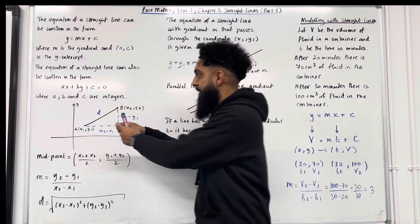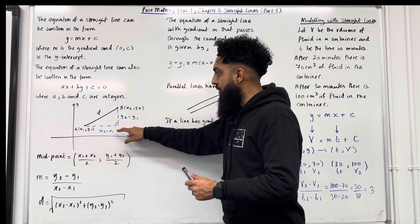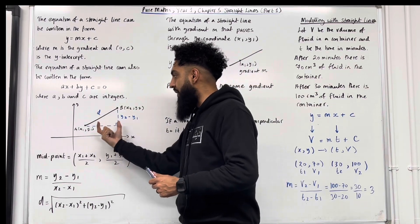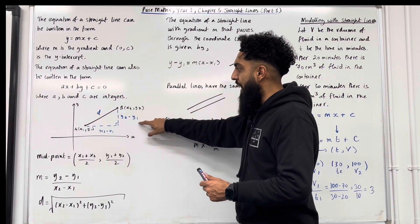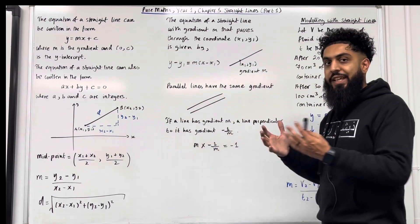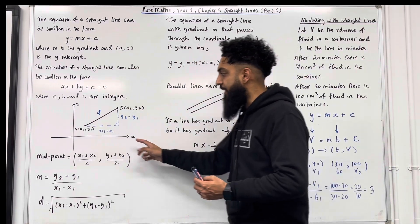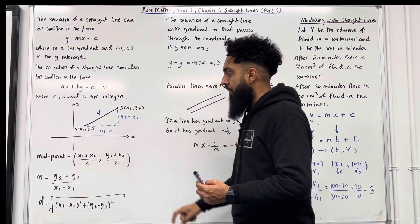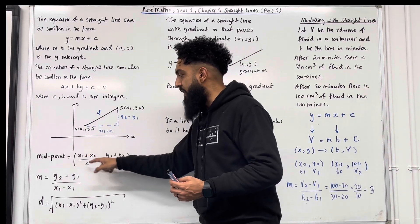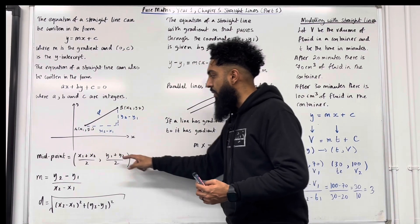D represents the distance between the two points. x2 minus x1 is this horizontal distance and y2 minus y1 is this vertical distance. Now to calculate the midpoint of the coordinates A and B, we have to apply this particular formula. So x1 plus x2 over 2, y1 plus y2 over 2.